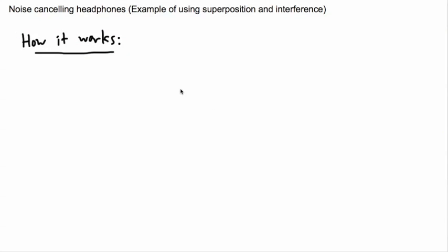A really good example of using interference is actually noise canceling headphones. You might have heard of these or seen people on an airplane using these. This is actually a really good example of superposition and interference.